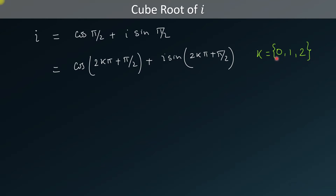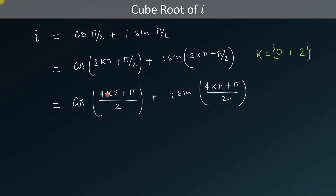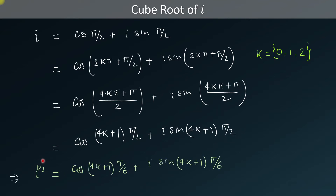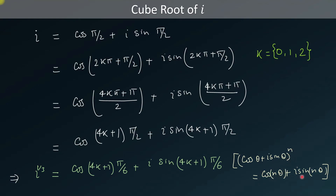So we will take only these three values. This expression can be written as cosine((4kπ + π)/2) + i·sine((4kπ + π)/2), which we rewrite as cosine((4k+1)·π/2) + i·sine((4k+1)·π/2). This implies iota to the one-third is equal to cosine((4k+1)·π/6) + i·sine((4k+1)·π/6), by using Euler's identity: (cosθ + i·sinθ)^n = cos(nθ) + i·sin(nθ).